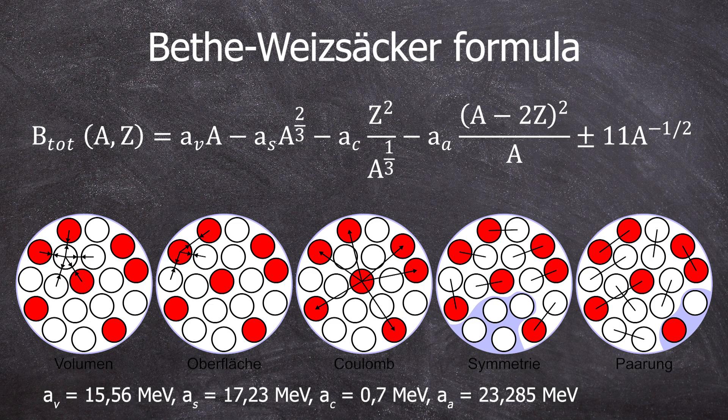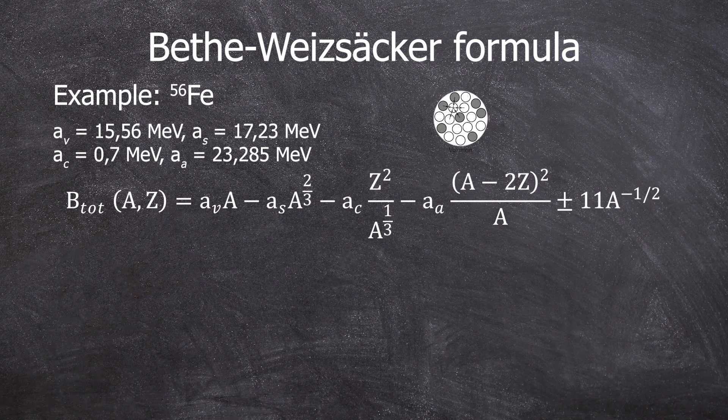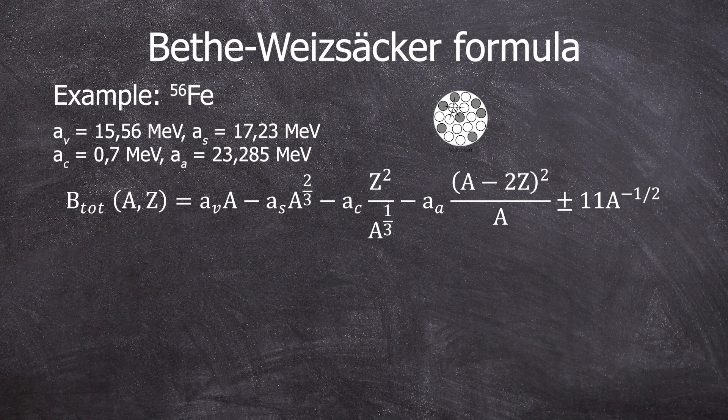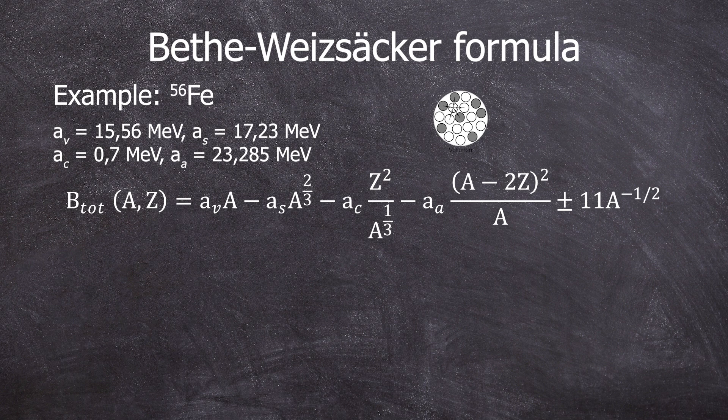First and foremost, A is the number of nucleons, Z is the proton number, N is the neutron number. Let's do this with the example of iron-56.